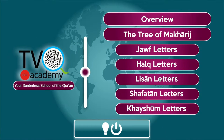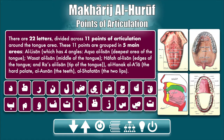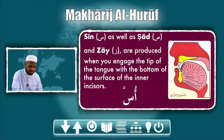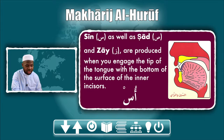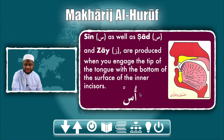Today we have a new letter from among the letters of al-lisan, which comes right after sod. Today's letter is sin. Sin is one of three letters that together — a triplet — come from the same point of articulation. They engage the same organs of the mouth. Sin, as well as sod and zai, are produced when the tip of your tongue engages and meets with the bottom of the surface of the inner incisors, or the lower teeth.